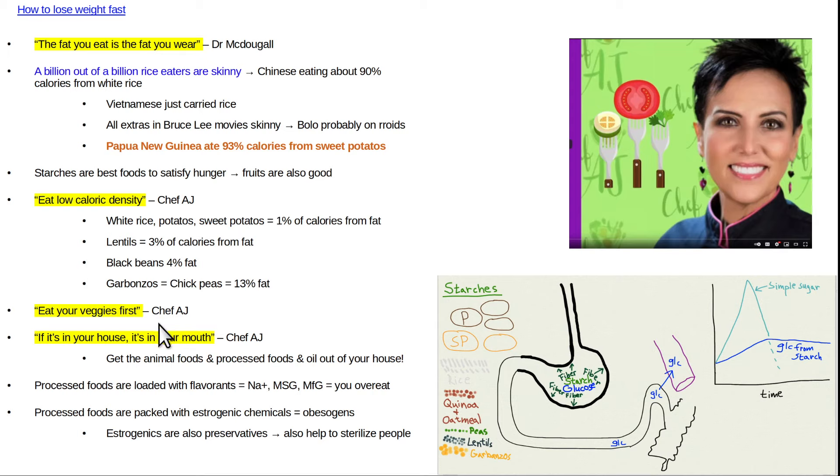Eat your veggies first. Chef AJ emphasizes that. And it makes sense. Veggies are very low in caloric density. It's going to stretch your stomach, provide early satisfaction to hunger, slow down your digestion. Chef AJ also writes that if it's in your house, it's in your mouth. So get all the animal foods, processed foods, the oil out of your house. That will do you no good. You'll have a moment of weakness and you'll binge it if it's still in your house.